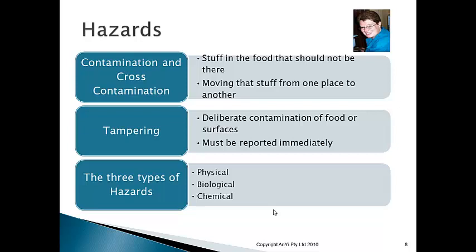In the fridge or cold rooms, raw food must never sit above cooked food. If any material — such as blood containing food poisoning bacteria — drips from raw food onto cooked food, you've cross-contaminated it. Always place raw food below cooked food and keep things separated. There are three types of hazards: physical, biological, and chemical.